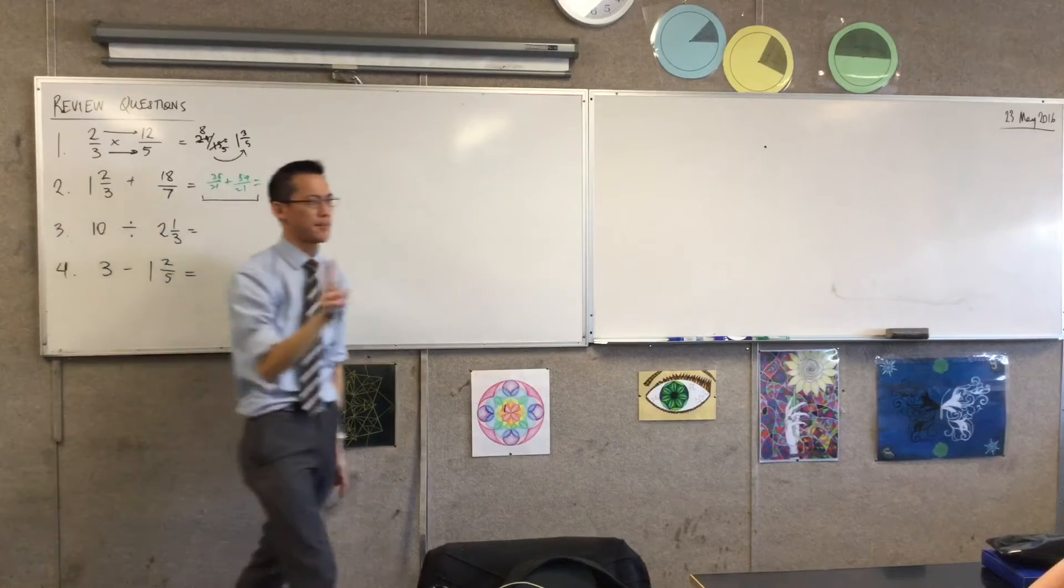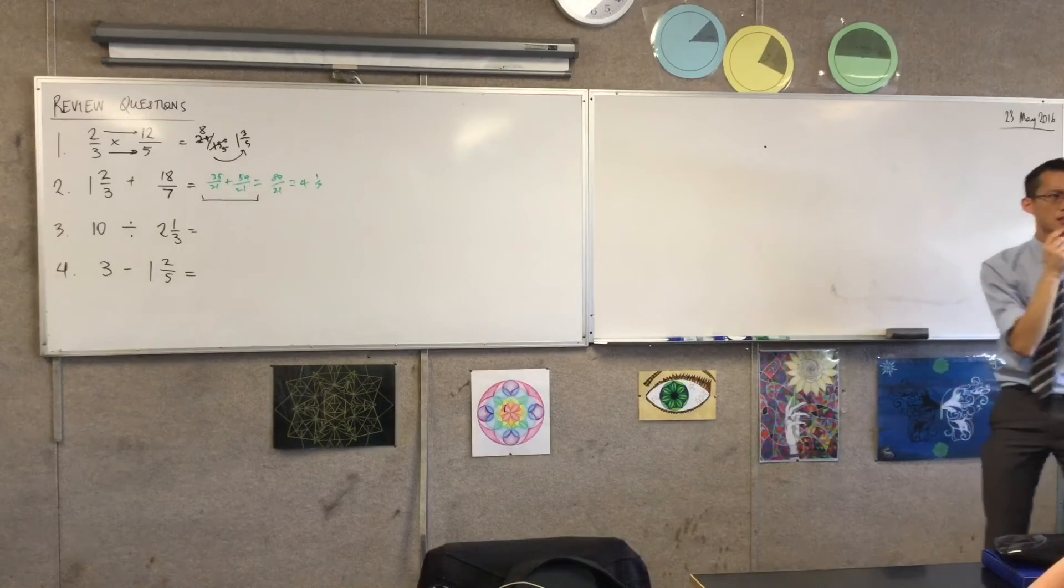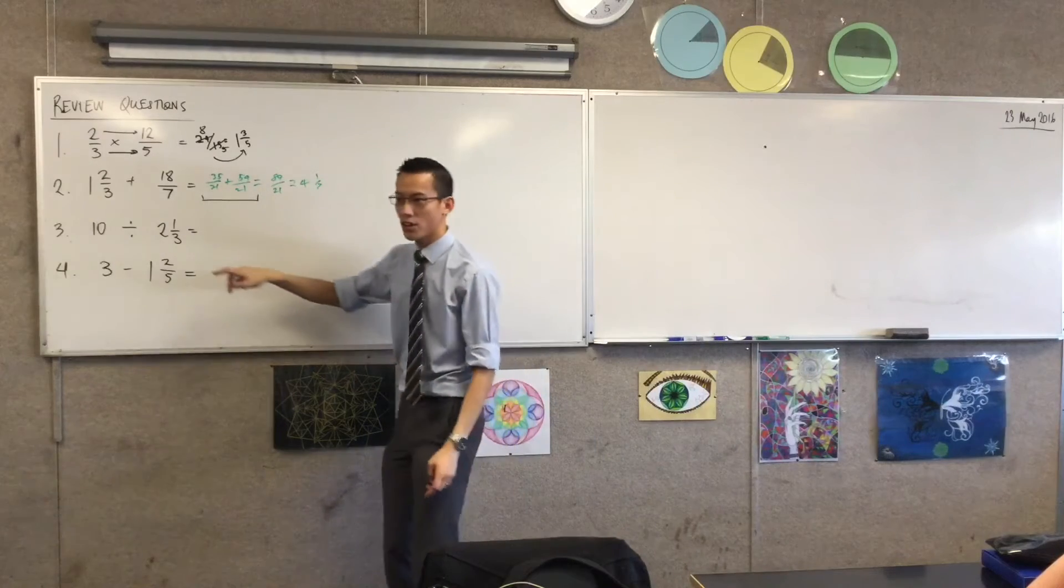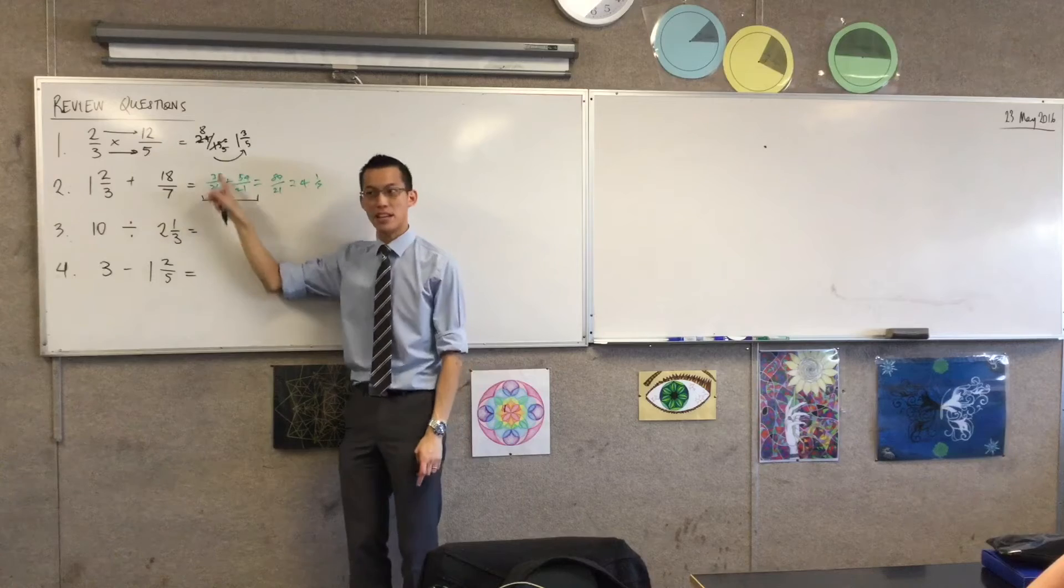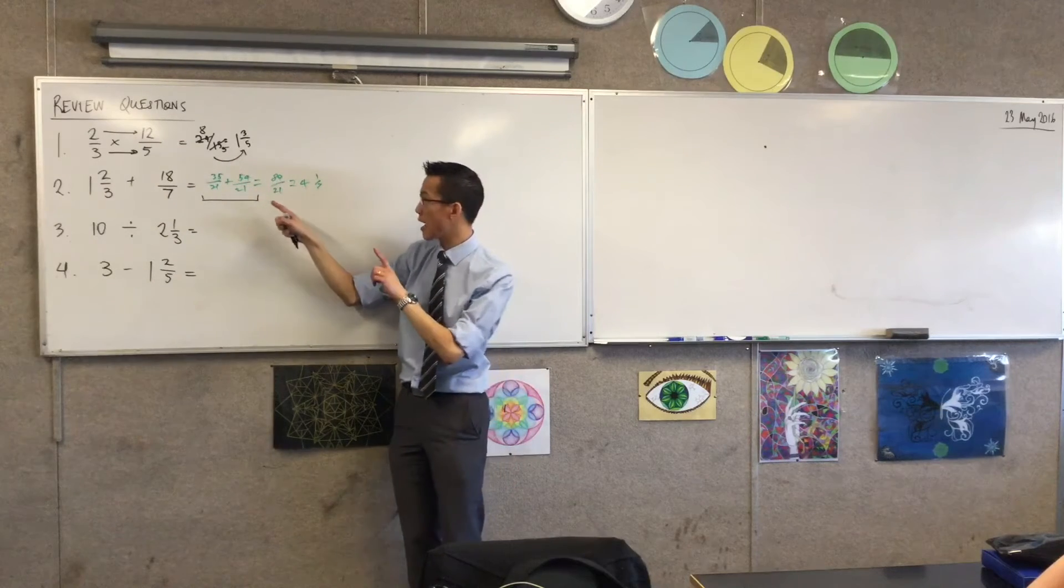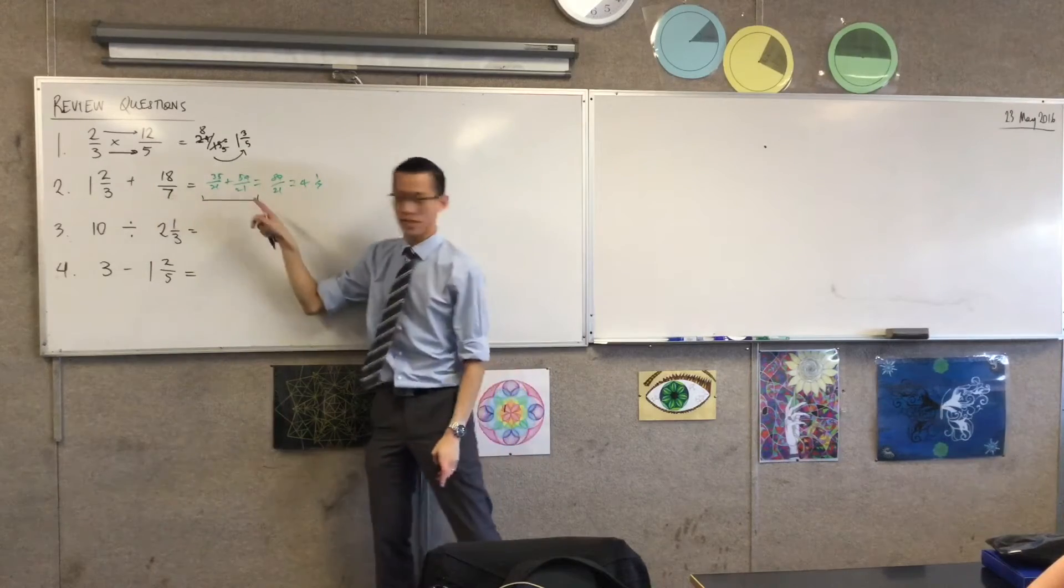Again, two things have happened. Number 1, there's a conversion here from a mixed numeral to an improper fraction. And then secondly, what was the second thing that happened? Did you notice? What happened to those denominators? Change. Yes, true. That means the denominators are the same. Yeah, good. So, common denominator. This one got multiplied by 7 and 7. This one got multiplied by 3 and 3. Right? 3 times 18 is 54. 3 times 7 is 21.